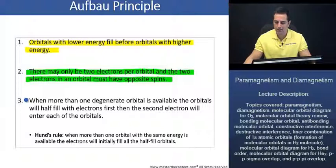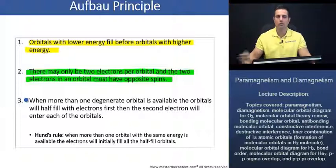Next, when more than one degenerate orbital is available, the orbitals will half fill with electrons first, then the second electron will enter each of the orbitals. And we'll see an example of degenerate orbital filling once we revisit that O2 molecule.